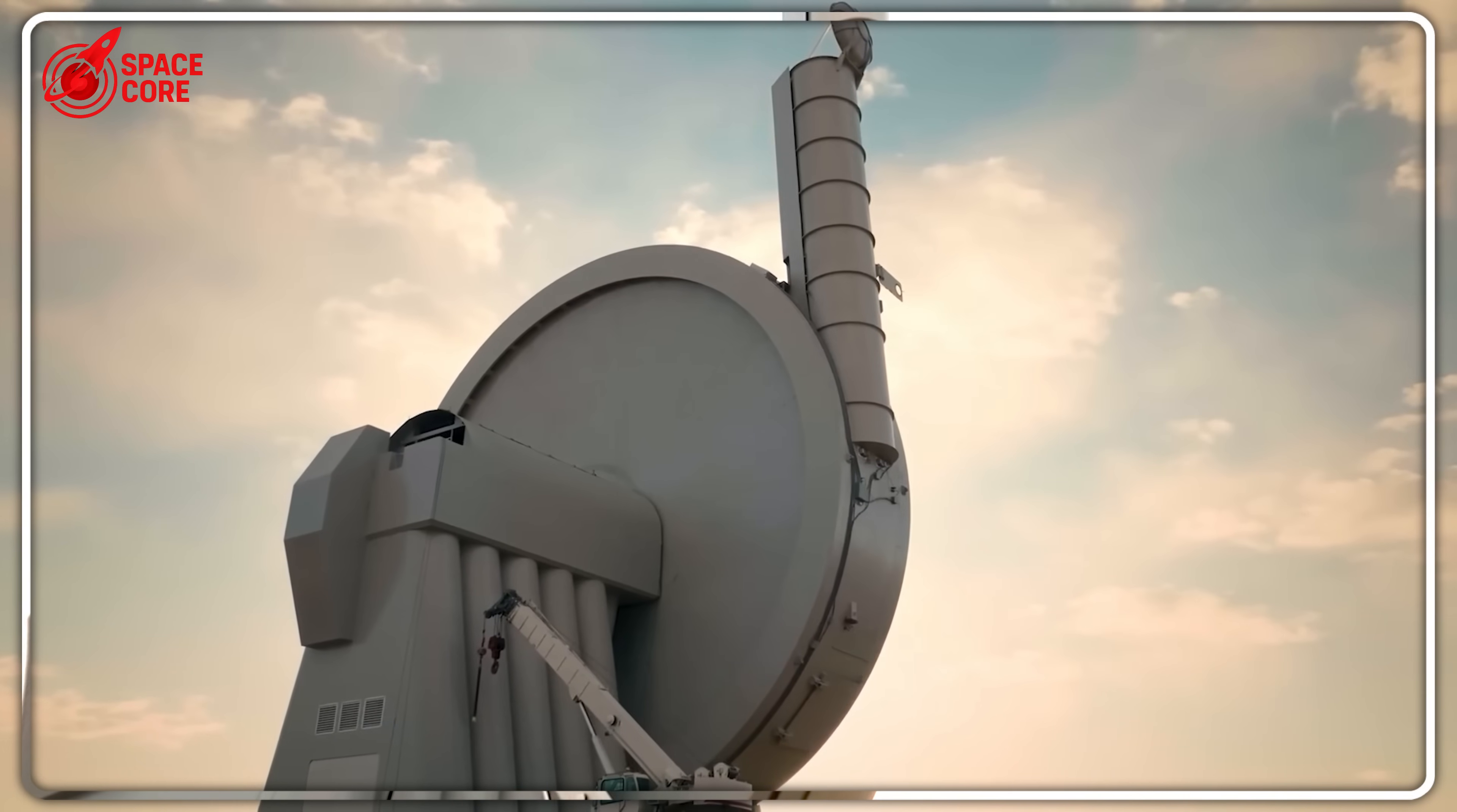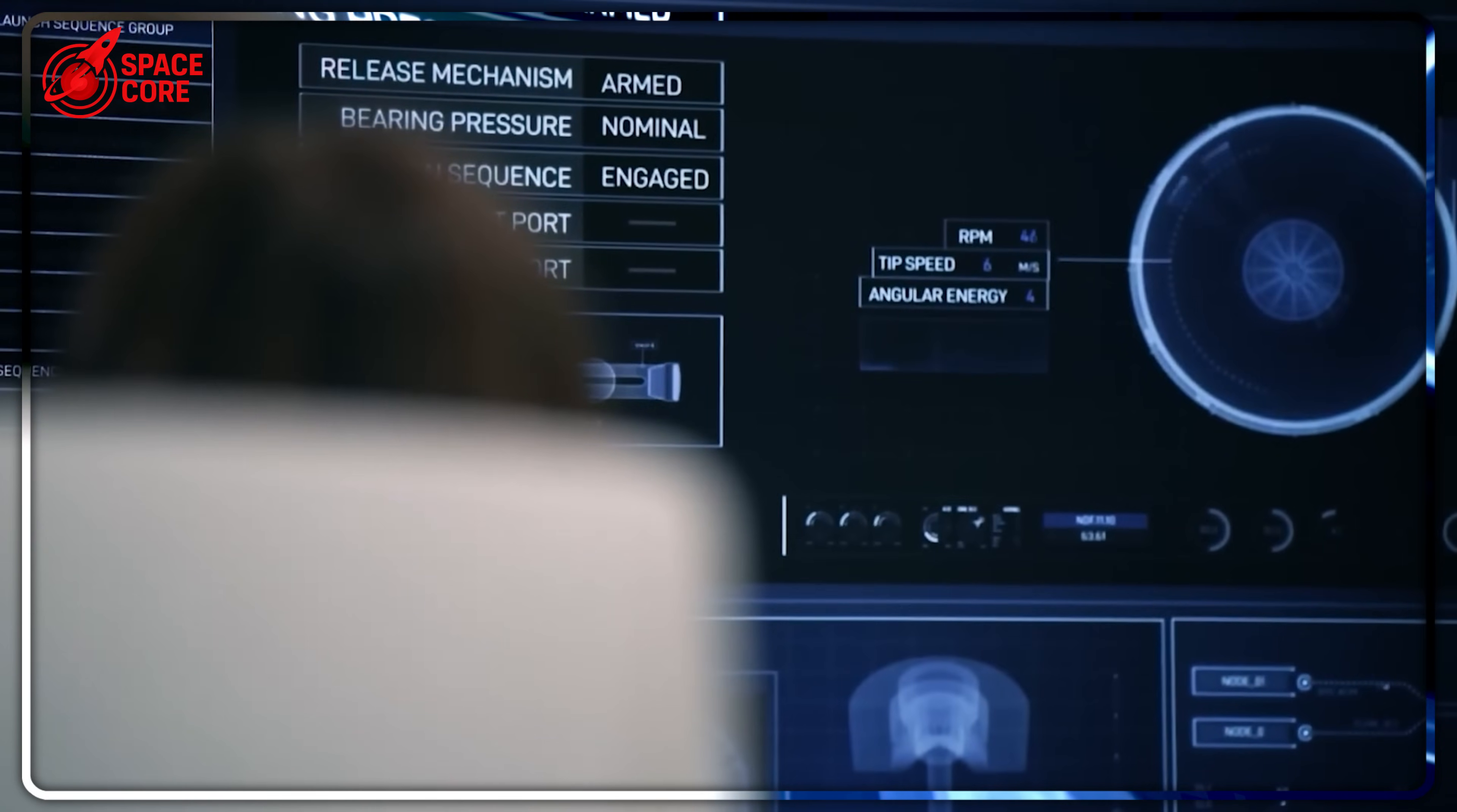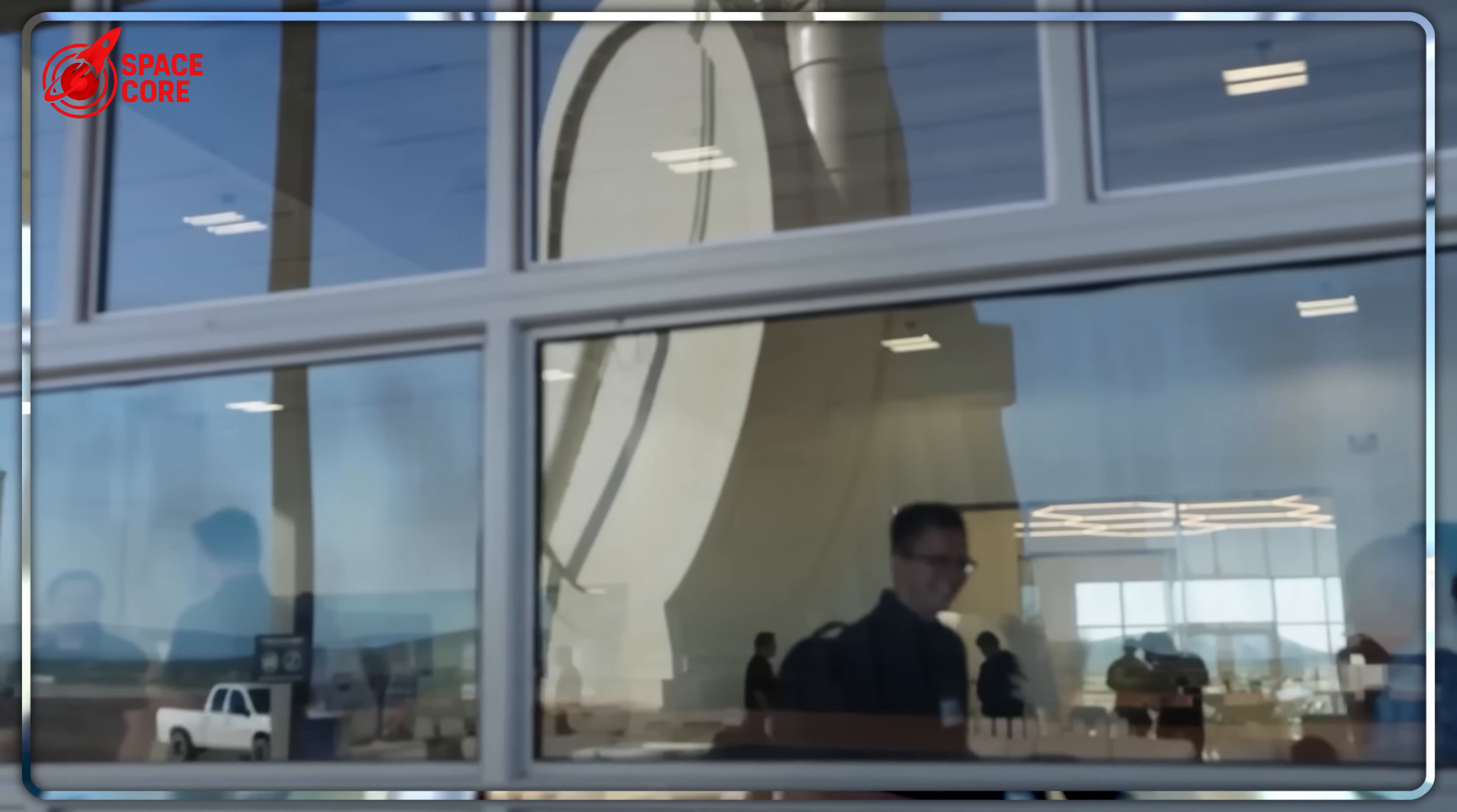$71 million vanished. CEO fired. Spin Launch's revolutionary centrifuge rocket technology that caught NASA's attention just collapsed overnight. This startup promised to launch satellites using giant spinning machines instead of traditional rockets, potentially changing space access forever. They had successful tests, major partnerships, and backing from top investors. But something went catastrophically wrong behind closed doors. What really destroyed this groundbreaking company that dared to challenge SpaceX's dominance? Let's dive right in.